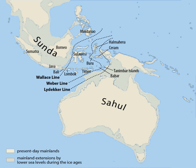Sundaland is a biogeographical region of southeastern Asia corresponding to a larger landmass that was exposed throughout the last 2.6 million years during periods when sea levels were lower. It includes the Malay Peninsula on the Asian mainland, as well as the large islands of Borneo, Java, and Sumatra and their surrounding islands.